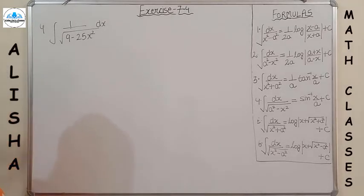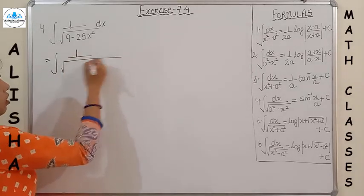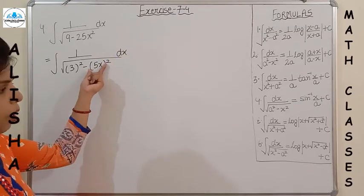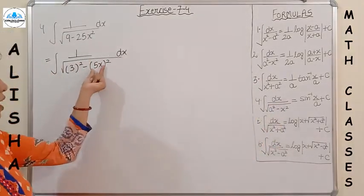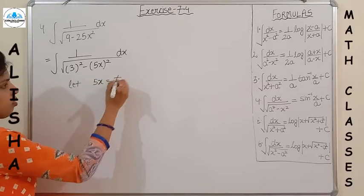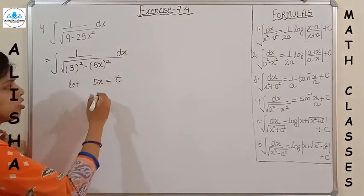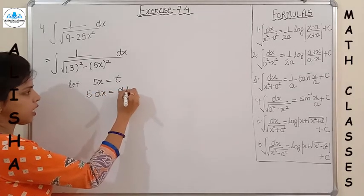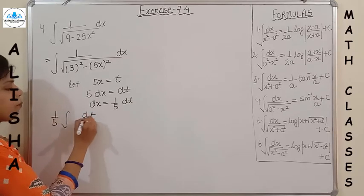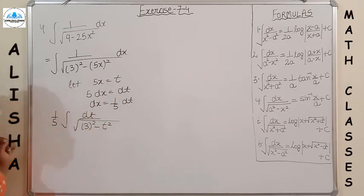Question 4: integration of 1/√(9 − 25x²). Write it as 1/√(3² − (5x)²). By comparing with the formula, we need to replace 5x by a single variable, so let 5x = t. Always take a single variable because all formulas have only single variables without coefficients. Differentiating: 5 dx = dt, so dx = (1/5) dt. Substituting: (1/5) dt / √(3² − t²).